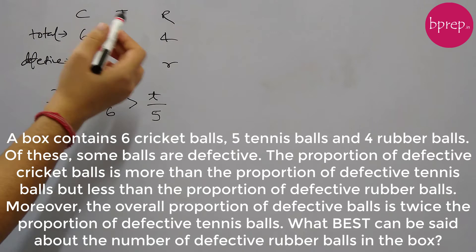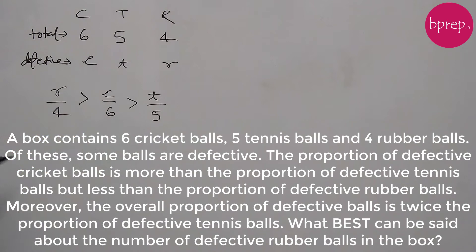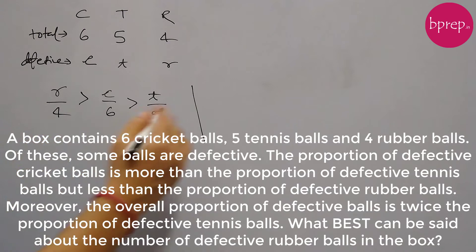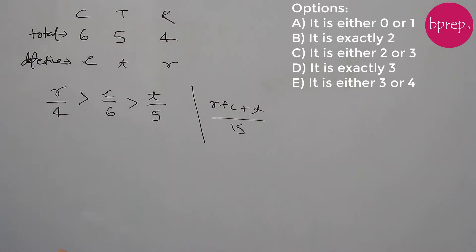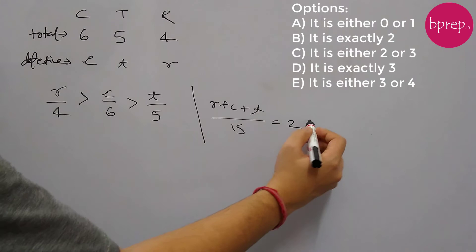So this is the order of proportion of defective balls. Moreover, the overall proportion of defective balls is twice the proportion of defective tennis balls. The overall proportion of defective balls will be r plus c plus t by 15, and this equals 2 into t by 5.